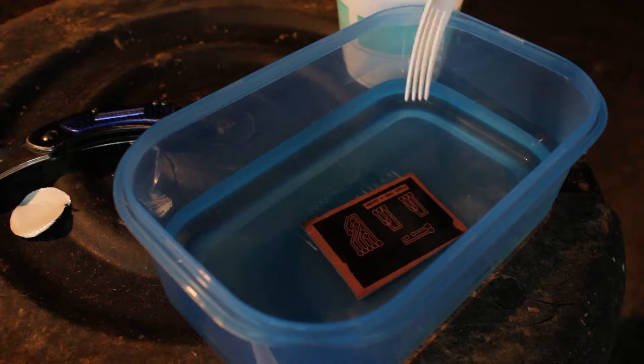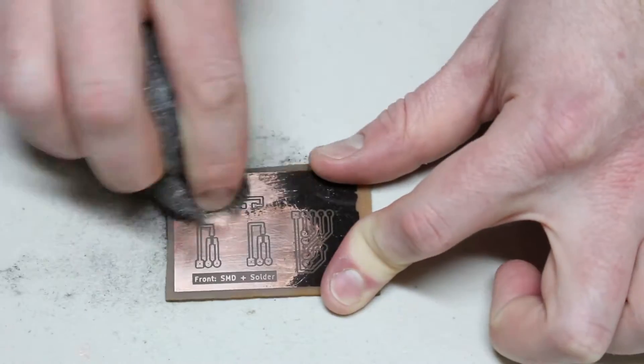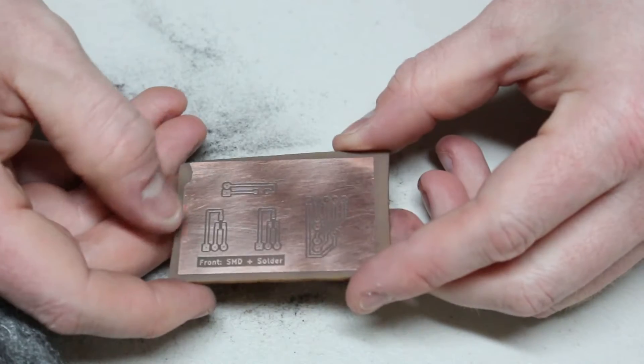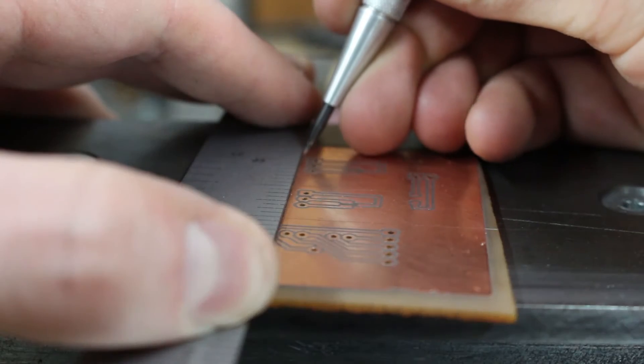I mix those together and let the board soak. The exposed copper dissolves, and then I can remove the toner. I use drill bits to drill holes into the board that are sized based on the parts I've got to use.